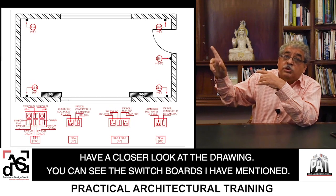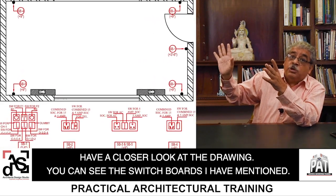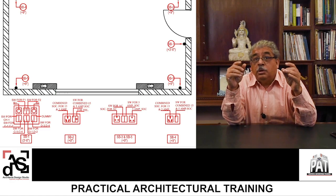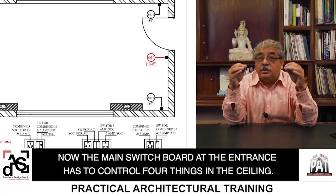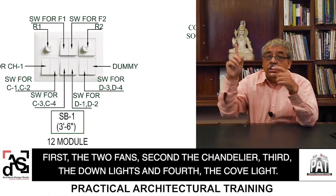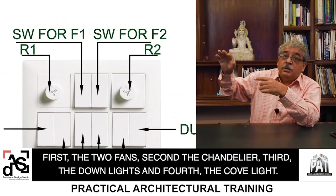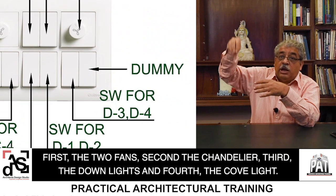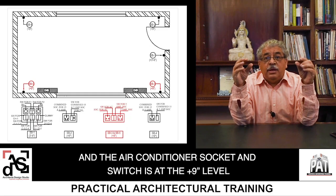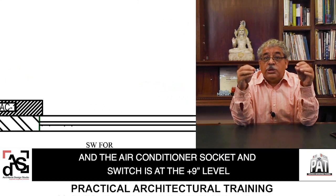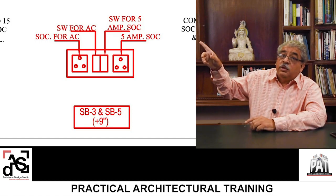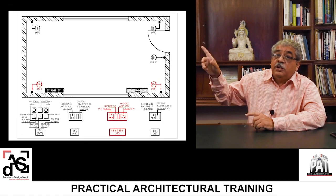If you have a closer look at the drawing you can see all five switchboards mentioned. The main switchboard at the entrance has to control four things in the ceiling: first, the two fans; second, the chandelier; third, the down-lighters; and fourth, the cove light. The air conditioner socket and switch is at plus nine inch level, either in switchboard number three or switchboard number five, as mentioned in the drawing.